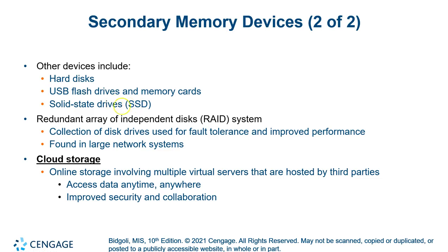This is the most technical chapter. A redundant array of independent disks — if I really want my data secure, I'll save it on two or more different hard drives at the same time. That's called fault tolerance. It's not acceptable for a bank to lose data, or for Grossmont College to lose grades and records. In large systems, you can't allow it to go bad. Now we also store a lot of stuff out in the cloud.